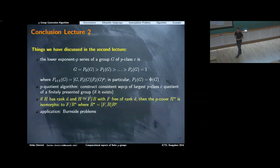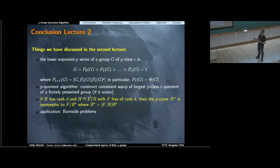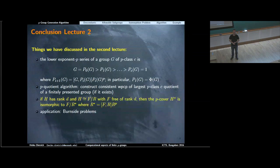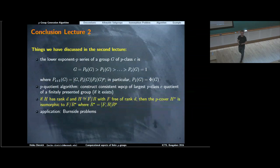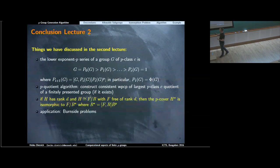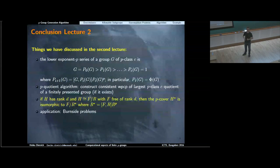An important tool in that construction was the covering group. If we have a p-group with d generators, realized as a quotient F over R where F is free of rank d, then the p-cover H* is isomorphic to F over R*, where R* is given by this normal subgroup. This realization of H as a quotient of a free group with d generators was used in the proof to show that the cover can be defined as that group and satisfies all the required properties.